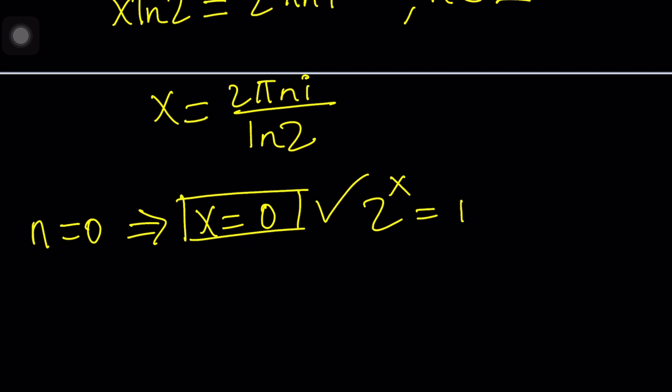But what if n does not equal 0? Then you're going to get some complex or imaginary solutions. For example, if n is equal to 1, we're going to get x equals 2 pi i divided by ln 2. You can also think of this as 2 pi over ln 2 multiplied by i. In other words, this is an imaginary number, some multiple of i.